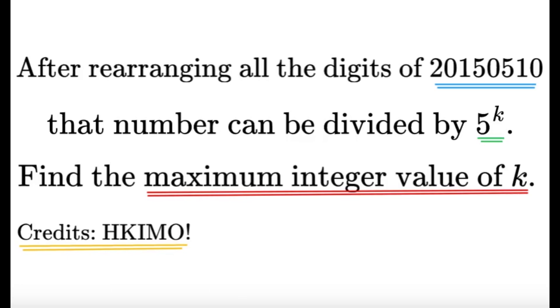After rearranging all the digits of the number 20,150,510, that number can be divided by 5 raised to k. Find the maximum integer value of k. Credits to the Hong Kong International Math Olympiad for this question.